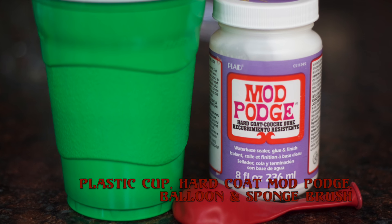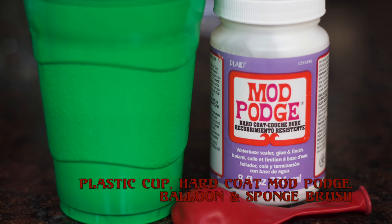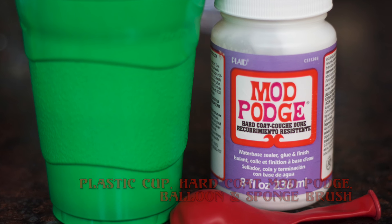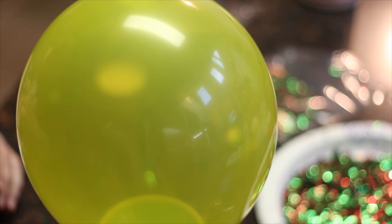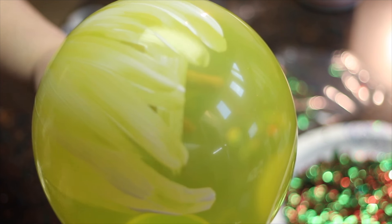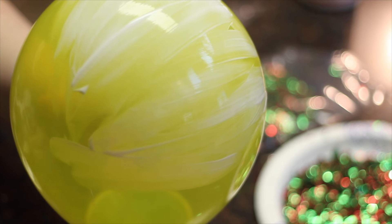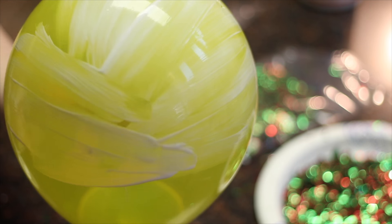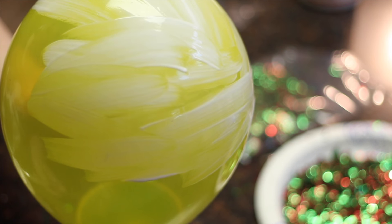For the last DIY, you'll need a plastic cup, hardcoat Mod Podge, a balloon, and a sponge brush. I decided to bring back one of my most watched DIY projects, the confetti bowl. I just wanted to update it a bit by using hardcoat Mod Podge instead of just regular Mod Podge. It does hold a lot better with the hardcoat.